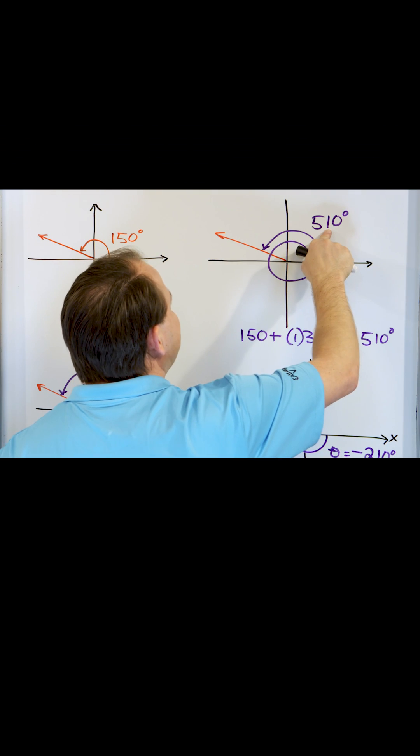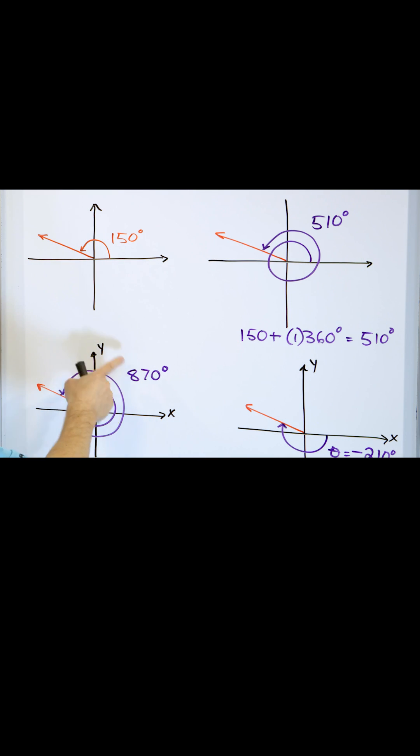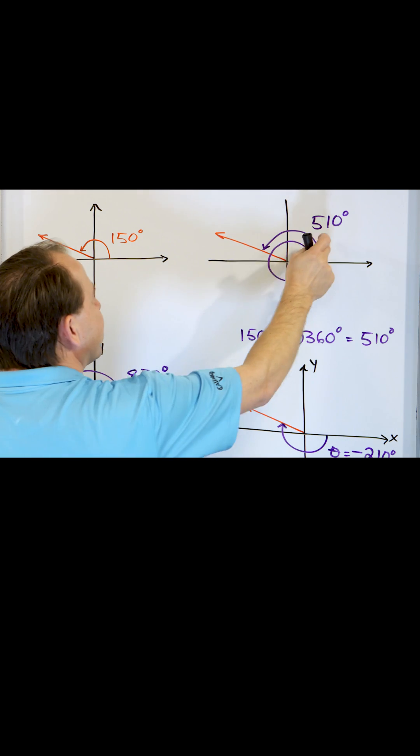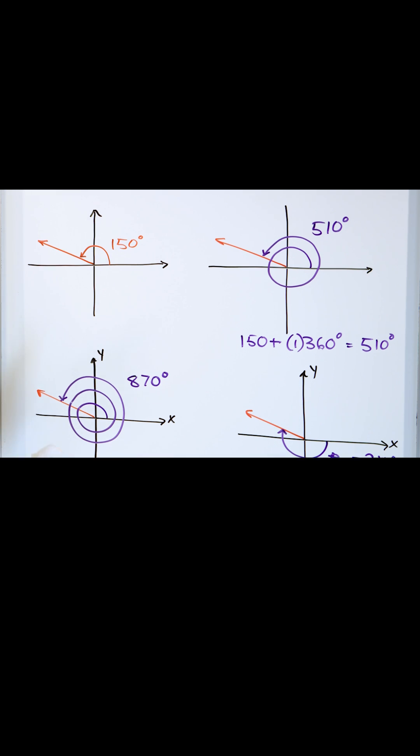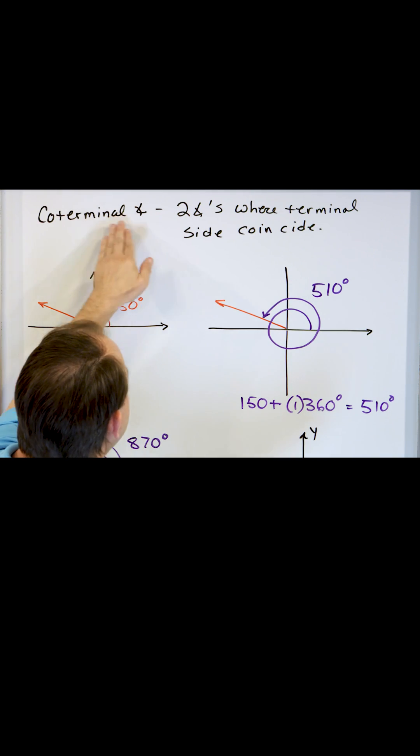I can add 360 and get a larger angle. I can add 360 again to get yet another larger angle, but these three numbers represent the same physical location of the terminal side. This means these are coterminal angles.